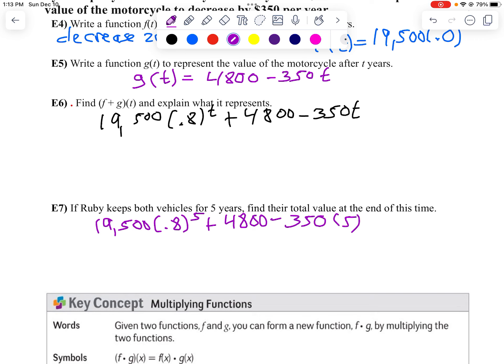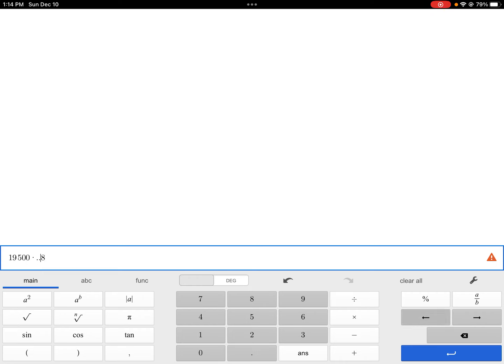So we're going to take, I think it's 19,500, wasn't it? Yeah. 19,500 times 0.8. So 19,500 times 0.8. I think I got two decimals in there, don't I? Times 0.8. I'm going to put that in parentheses. And I'm going to raise that to the fifth power. And I'll add 4,800 minus 350, times 5.